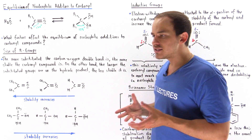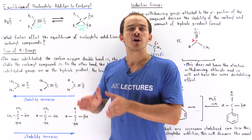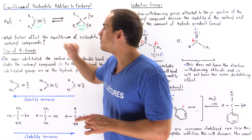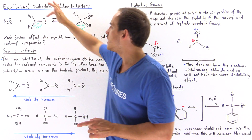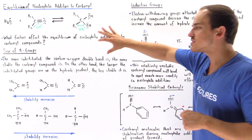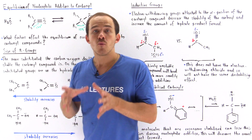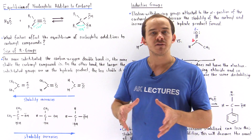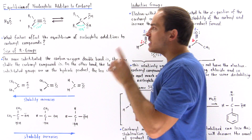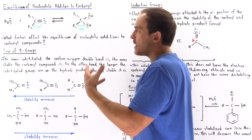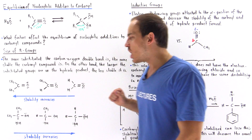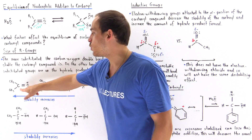Recall that double bonds of an alkene are more stable when they are more substituted and less stable when they are less substituted. The same thing is true for the double bond inside our carbonyl — the double bond between carbon and oxygen. The more substituted the carbon-oxygen double bond is, the more stable that carbonyl compound is, and the more stable our double bond is, the less reactive it is. If these groups are methyl groups, that makes our double bond more stable compared to if these groups were H-groups. Stability increases as we go from formaldehyde to aldehyde to ketone.